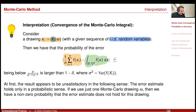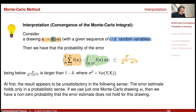The error estimate is sigma — the square root of the variance of f(X_1) — times the square root of delta, divided by the square root of n. So we have a convergence rate of one divided by square root of n. Unfortunately, we only have the result that this holds in probability.